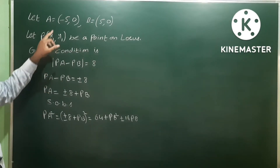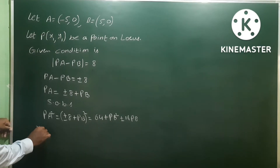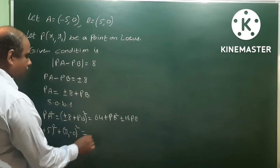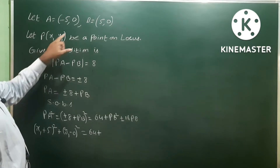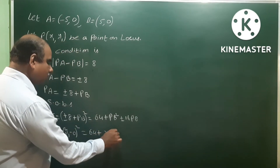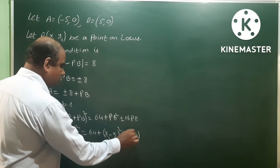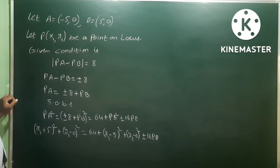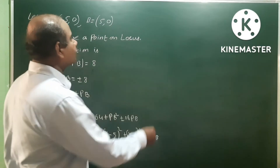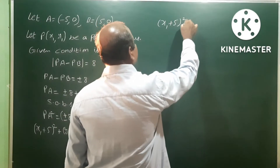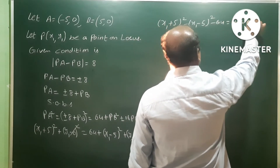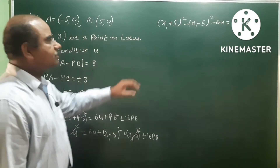Now substitute the values. PA² means the distance between P and A: (x₁ minus minus five)² = (x₁ + 5)² plus (y₁ minus 0)² which is y₁². And PB² means (x₁ minus 5)² plus y₁². So expanding: (x₁ + 5)² plus y₁² minus (x₁ minus 5)² minus 64 equals plus or minus 16 PB.